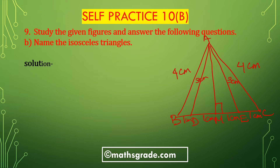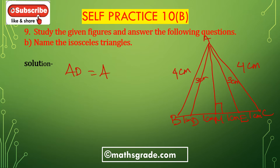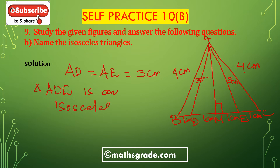Now the isosceles triangle is ABE. In triangle ADE, AD and AE are equal — that is 3cm. AD equals AE equals 3cm. So triangle ADE is an isosceles triangle because the sides AD and AE are equal to 3cm.